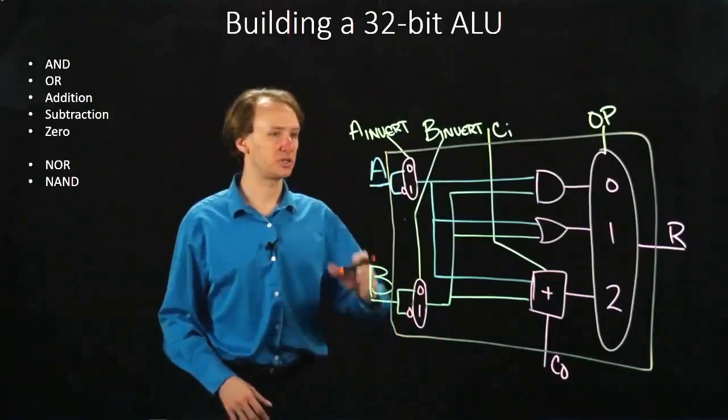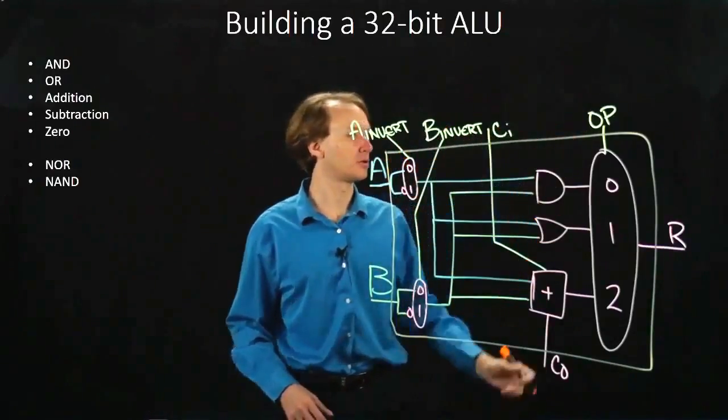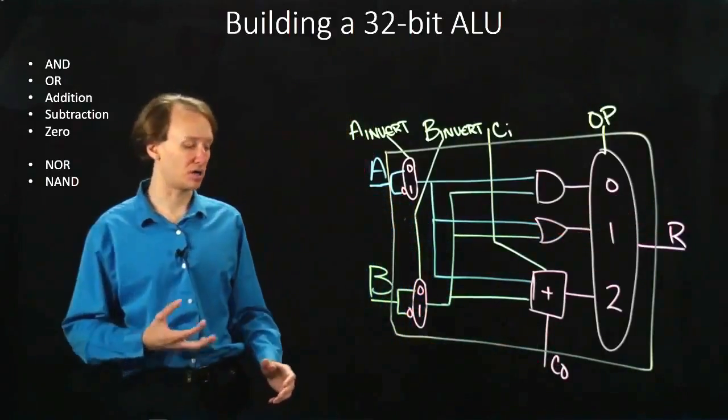So I've got several inputs here. I've got A, B, as well as A invert, B invert, carry in, and my operation. And I get a result and a carry out out of this box.